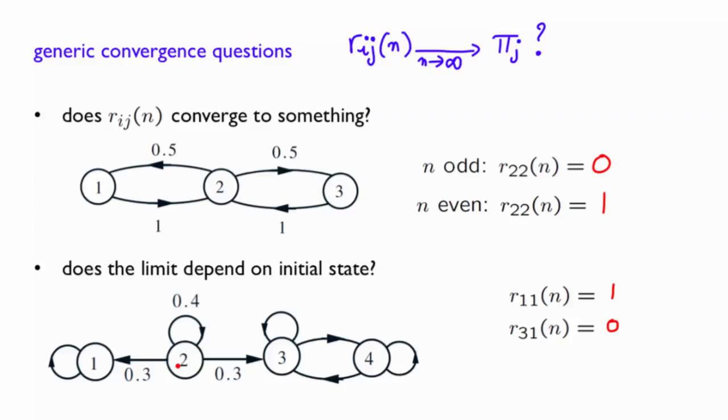Well, when you start in 2, you may stay in 2 for a while by doing these transitions. But eventually, with probability 1, you will escape. Either you will go to state 1 or you will escape to state 3.